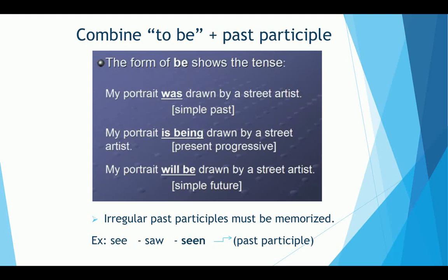Let's see some examples. 'My portrait was drawn by a street artist' — here I use the simple past. 'My portrait is being drawn by a street artist' — here I'm using the present progressive. 'My portrait will be drawn by a street artist' — here I use the simple future. So depending on what you want to express, you can use the simple past, present progressive, or simple future.